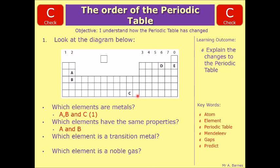Which element is a transition metal? You just have to know that the transition metal is this block in the middle. So it's C.